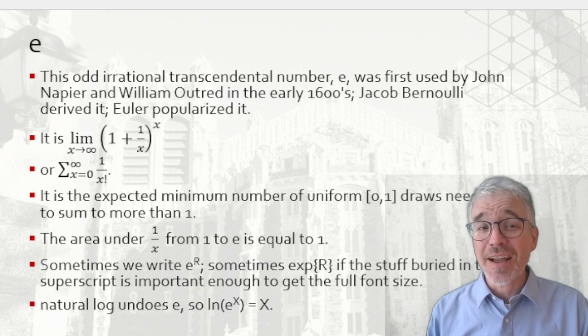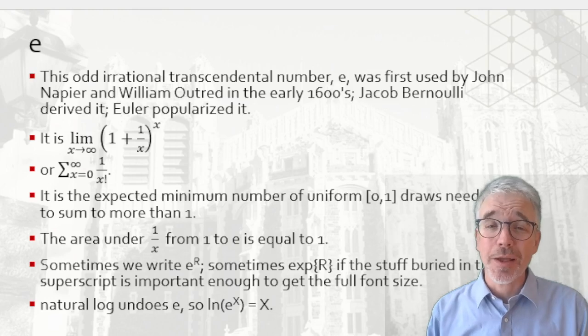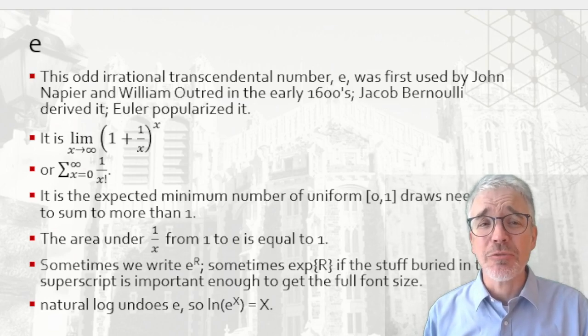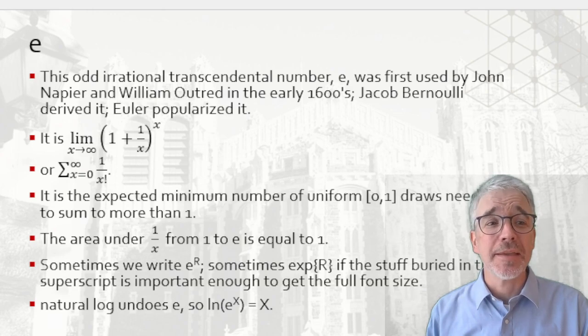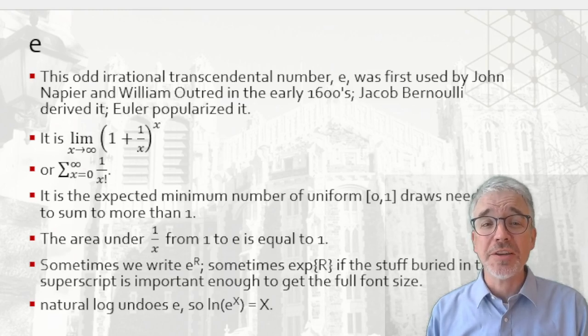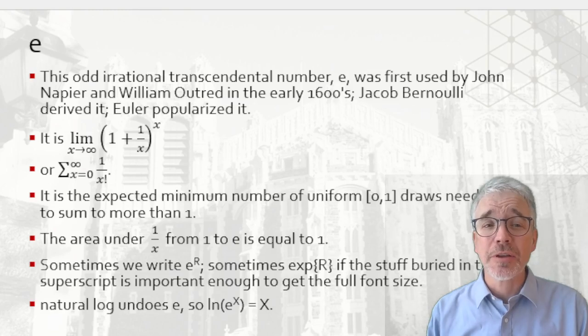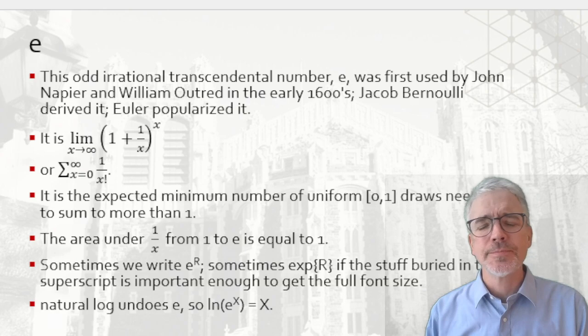Now, it turns out E pops up in any number of completely different places. It's kind of a wackadoodle thing. It's the infinite sum of 1 over x factorial. It comes up as the expected minimum number of uniform [0,1] draws needed to sum to more than 1. It's the area under the curve 1/x. From 1 to E, that area is equal to 1.